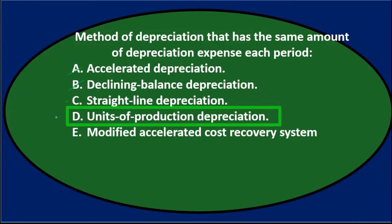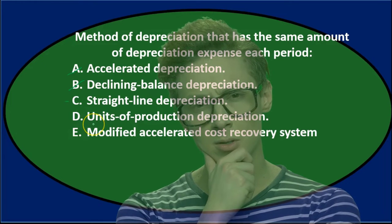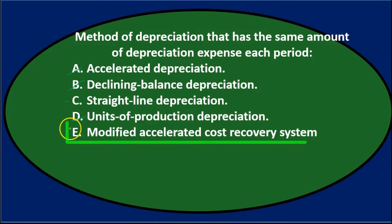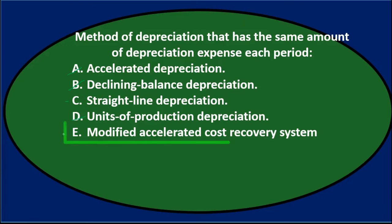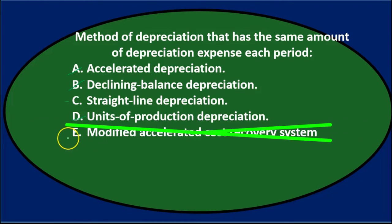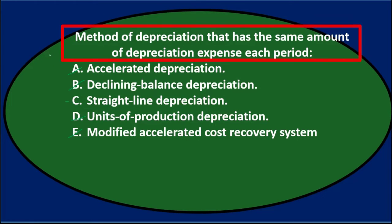D. Units of production depreciation. You might think that might be the same each year, but it depends on how many units we produce. So if we produce more or less units, we will have more or less depreciation. E. Modified accelerated cost recovery system, which is a tax depreciation method. When thinking about financial accounting, MACRS is typically not the answer — and it's usually an accelerated method as well. So C, straight line depreciation, is the correct answer.